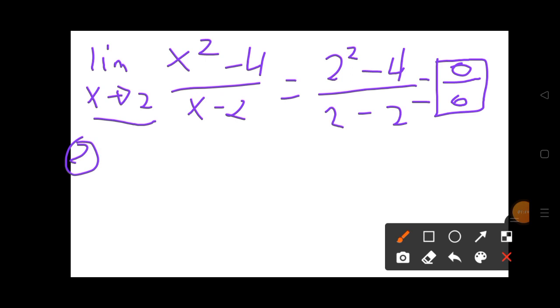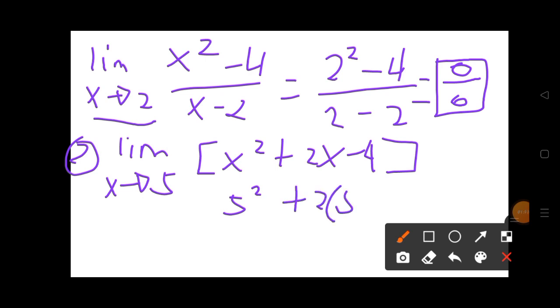Example number 2, we have the limit of x approaches to 5. We have x squared plus 2x minus 4. Substitute the x into 5, so we have 5 squared plus 2, the value of x is 5 minus 4.